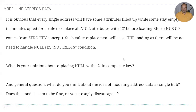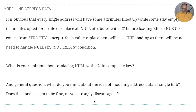It's obvious that every single address will have some attributes filled while others stay empty. My teammates opted for a rule to replace all null attributes with minus two before loading business keys to a hub — the zero key concept we trained in the DVA bootcamp. Such value replacement will ease hub loading as there will be no need to handle nulls in a not-exists condition. What's your opinion about replacing null with minus two in composite keys, and what do you think about modeling address data as a single hub — does this seem fine or do you strongly discourage it?